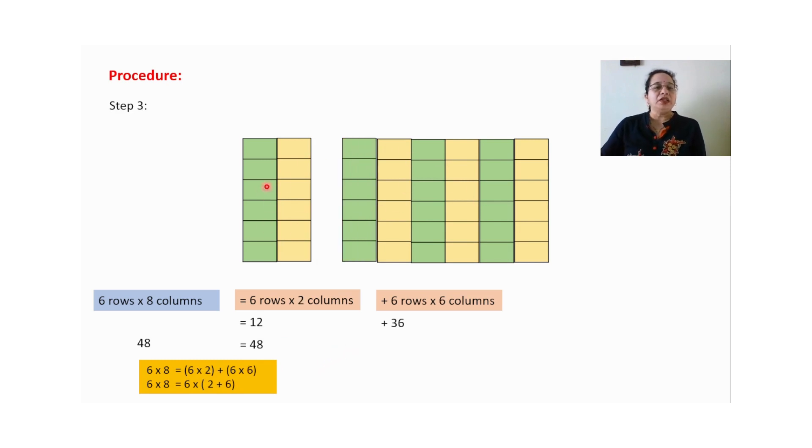Take another example. This time I have separated two box and two columns and six columns separately. For this figure, this set, I have six rows and two columns. That is total number of boxes are twelve. Now, here I have six rows and six columns. One, two, three, four, five, six. Six columns. Six rows into six columns will give you thirty-six. Twelve plus thirty-six will give you forty-eight. Initially we have started with six rows and eight columns. That is forty-eight.